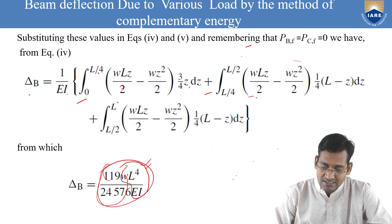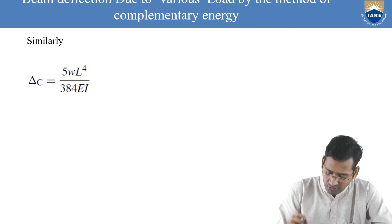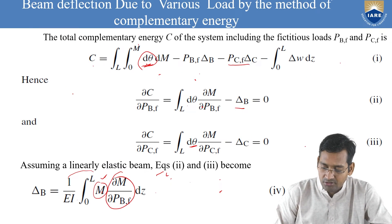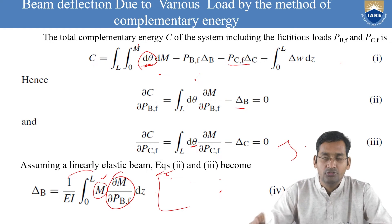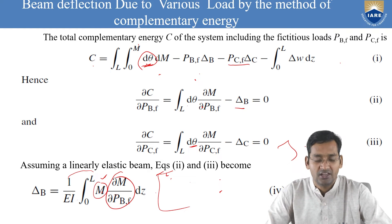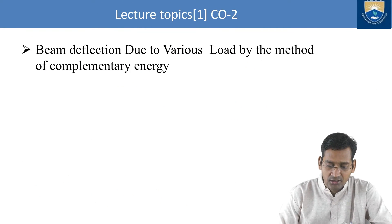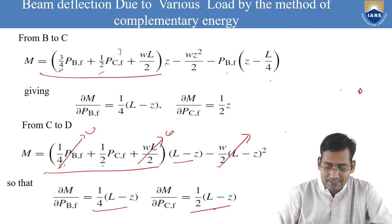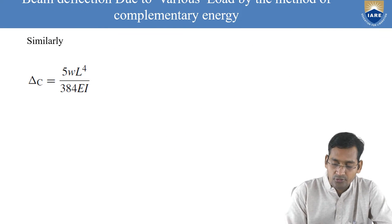We have done this for δB. Now similarly for δC: δC = (1/EI)[∫(0 to L/4) M(A-B) × (∂M/∂PCF)(A-B) dz + ∫(L/4 to L/2) M(B-C) × (∂M/∂PCF)(B-C) dz + ∫(L/2 to L) M(C-D) × (∂M/∂PCF)(C-D) dz].